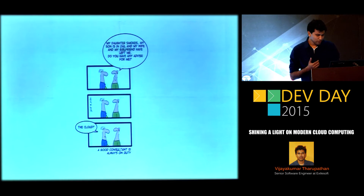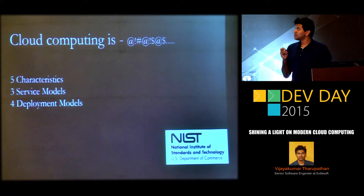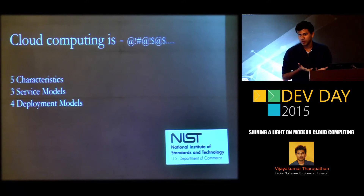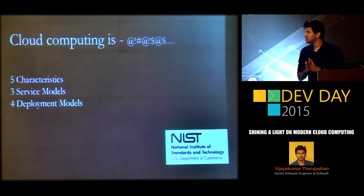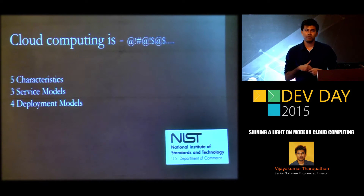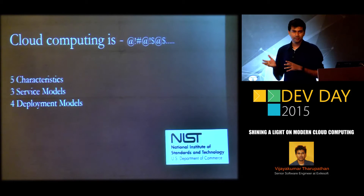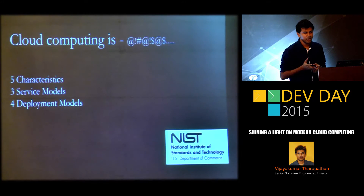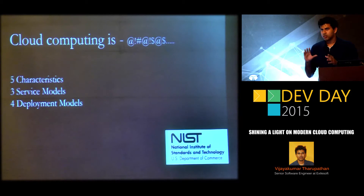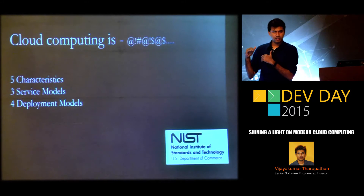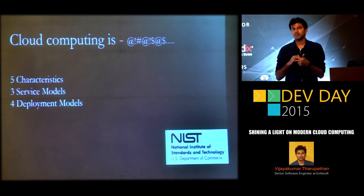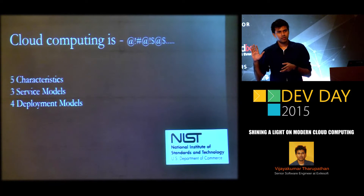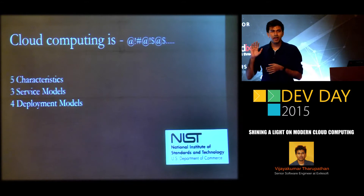Now let's see what cloud actually is. Cloud computing is defined by the NIST, and it has five characteristics, three service models, and four deployment models. More than the definition, let's look at what those are. Any platform to be noted as a cloud platform should have all five characteristics — that's the definition given by NIST. All five must be present.